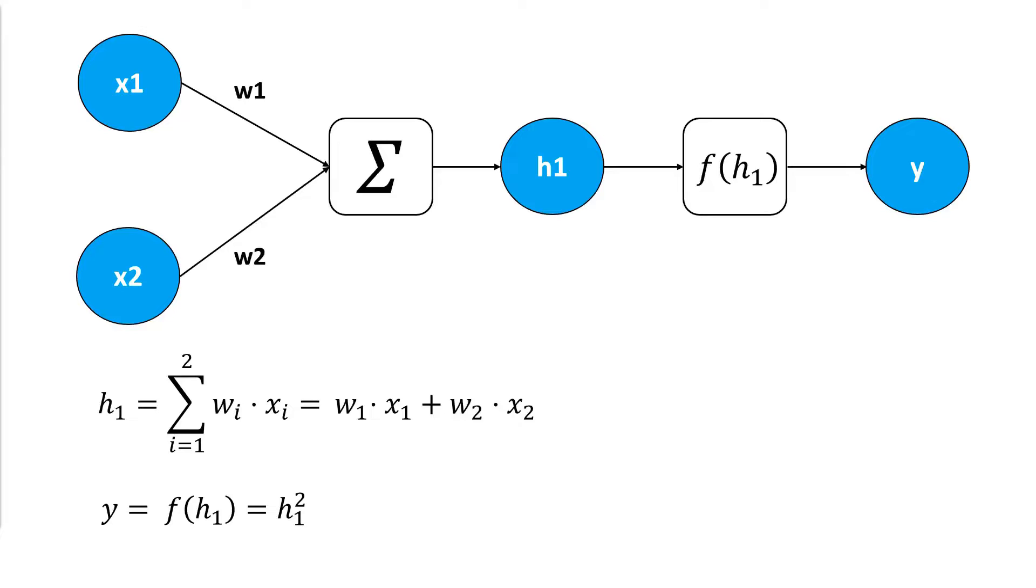As a short note, as I already mentioned in the beginning of the video, the output layer normally also has an activation function or function. But for this case, we just keep our focus on the hidden neuron for better understanding.